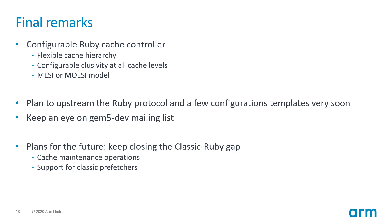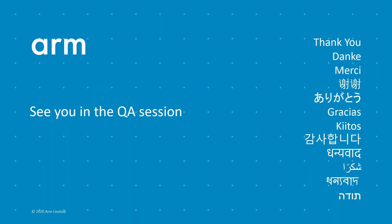So this was an overview of the new protocol we are working on. We are currently finalizing the implementation, and we plan to upstream very soon, so if you are interested, keep an eye on the mailing list for the latest patches. As plans for the future, we would like to keep enabling features from the classic memory system in Ruby, such as proper support for cache maintenance and also prefetchers. Thank you for listening, and I hope to see you in the Q&A session.